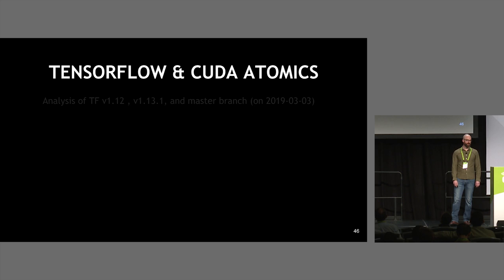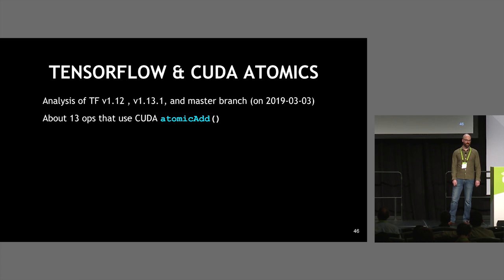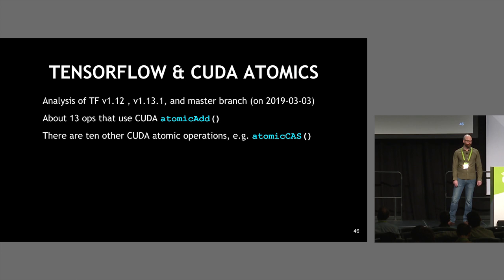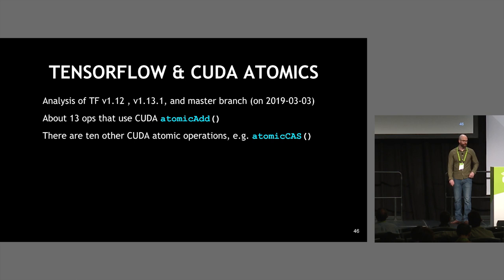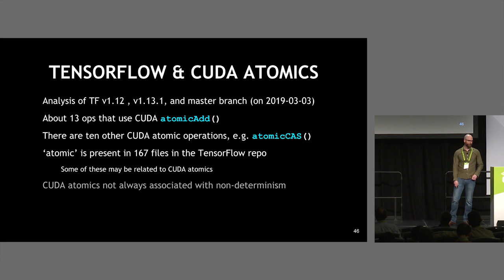Looking at TensorFlow and CUDA Atomics, I searched through release branches and the master branch for CUDA atomic operations. Atomic Add is used in 13 different ops — there are ops that still exist probably operating non-deterministically but haven't appeared in models I've looked at. There are also 10 other CUDA Atomic operations including Atomic CAS, with which you can implement any atomic operation but at significantly lower performance. The word 'atomic' is present in 167 files in the TensorFlow repo, though many may have nothing to do with CUDA Atomics.